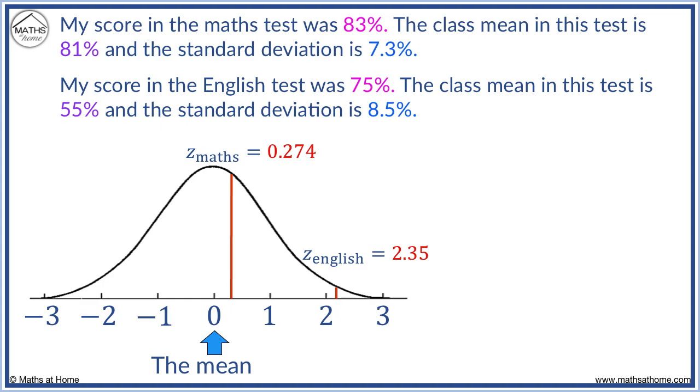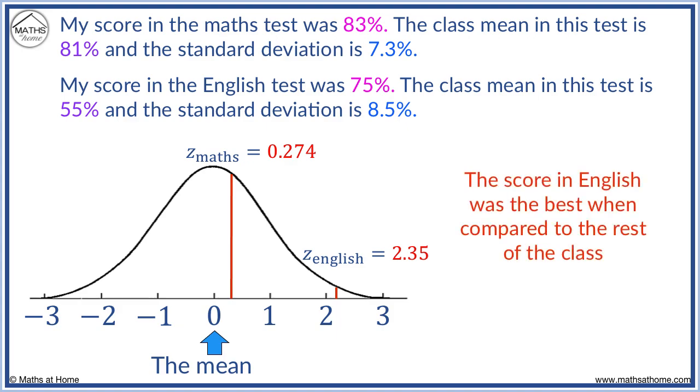The z-score is how many standard deviations from the mean a result is. It allows us to compare the two results even though they have different means. English was 2.35 standard deviations above the mean and was therefore better than maths with only 0.274.